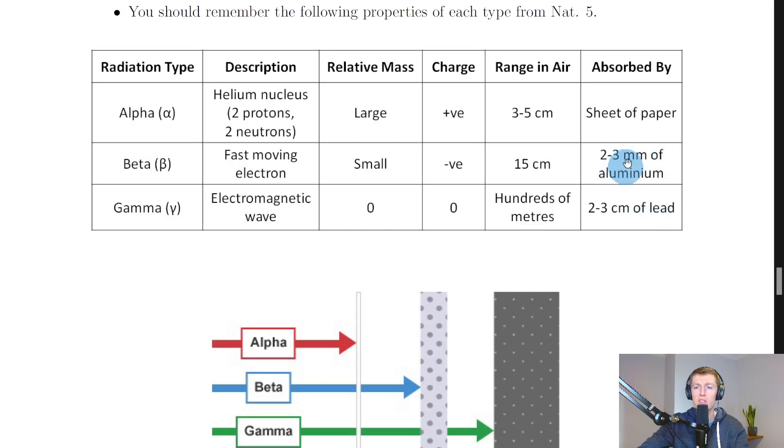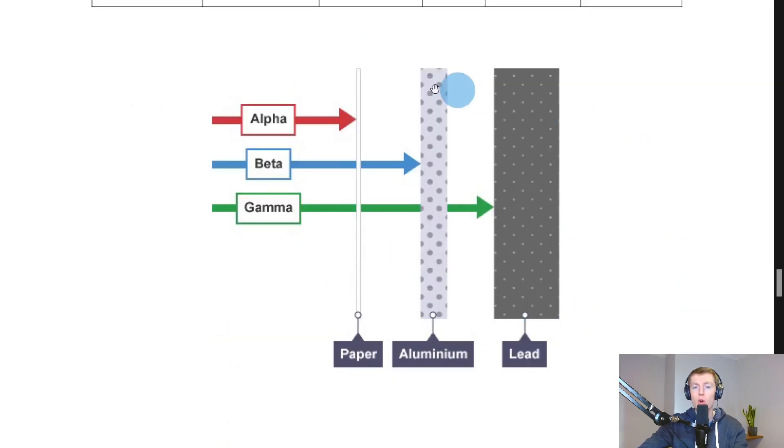And you can see the absorption properties summarized here where we've got the alpha particles coming in and being absorbed by the single sheet of paper. The beta particles can pass through the paper though, but are absorbed by a few millimeters of aluminium. Whereas the gamma rays can pass through both the paper and aluminium to reach the lead.